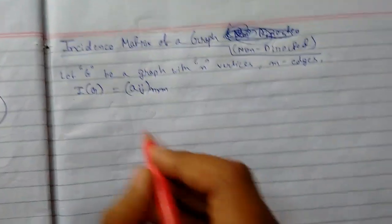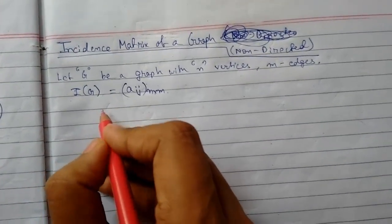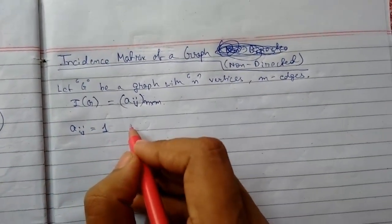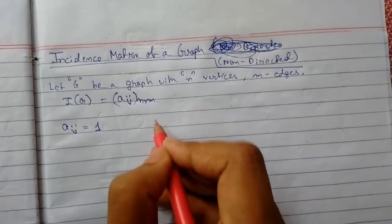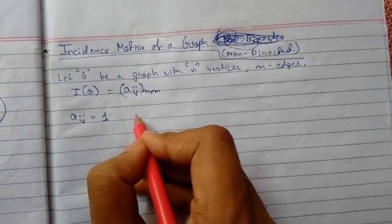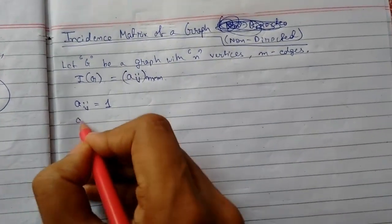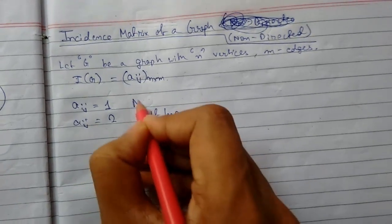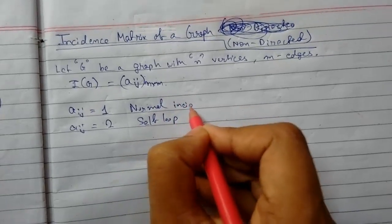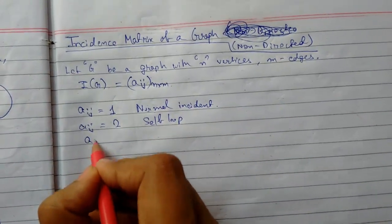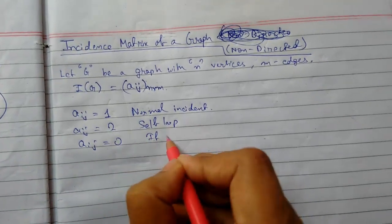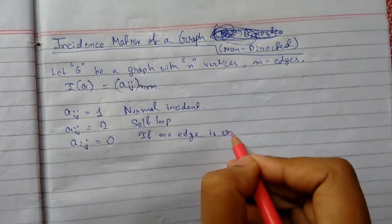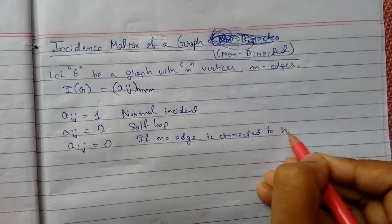The nomenclature is as follows: a_ij equals 1 if an edge is incident to vertex v_i but is not a self-loop; a_ij equals 2 for a self-loop at that vertex; and a_ij equals 0 if no edge is connected to the given vertex.